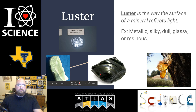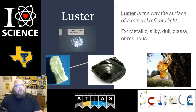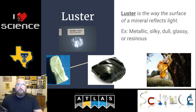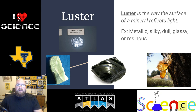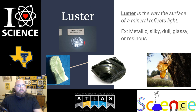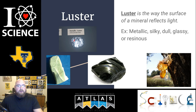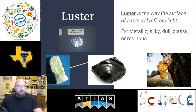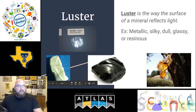Let's start with luster. Luster is the way that the surface of a mineral or substance reflects light — if you shine a light onto it, what does it look like? There are five examples of luster: metallic, silky, dull, glassy, and resinous. A metallic luster reflects light very strongly and appears very bright. Silky or dull is when light does not reflect off it the same way metallic does.